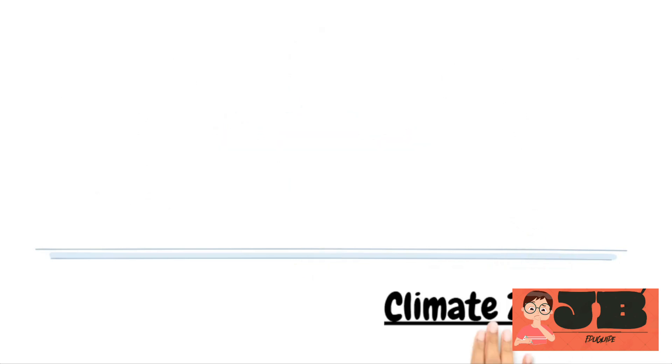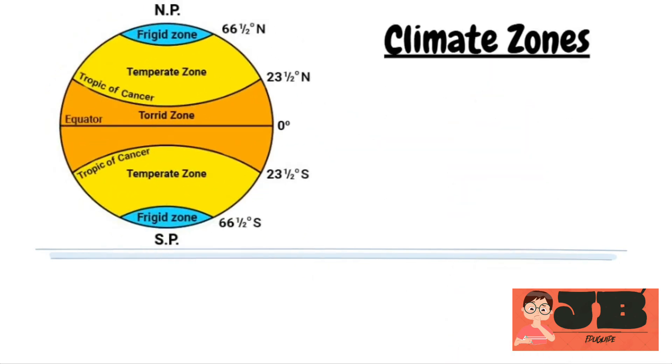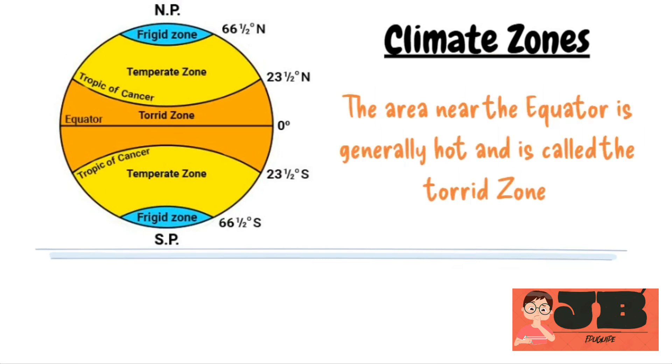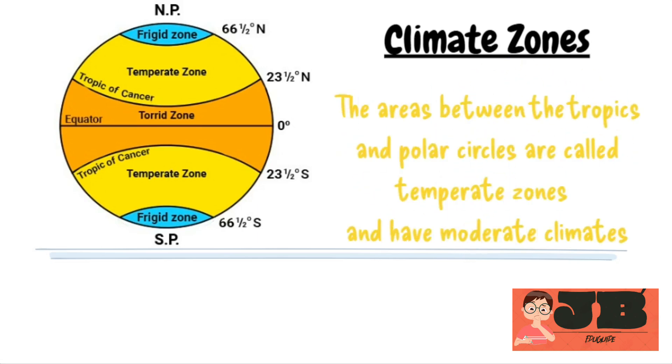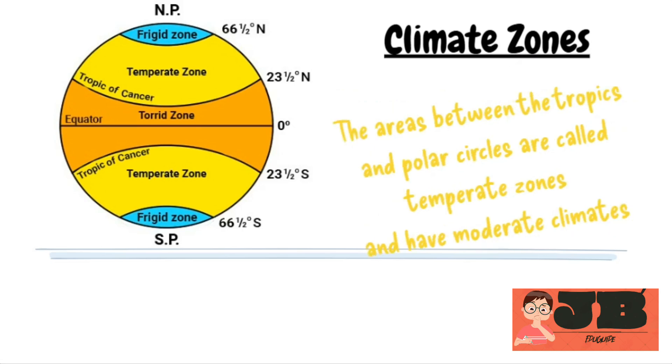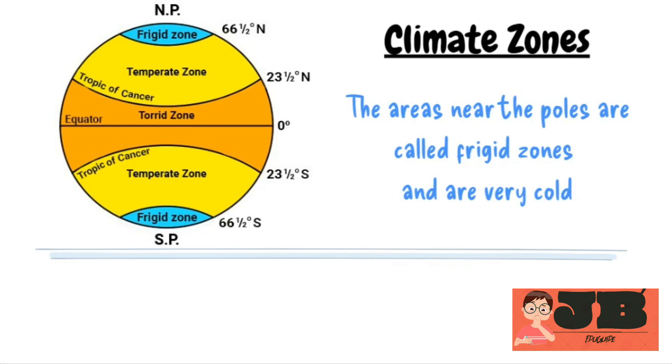The Earth is divided into different climate zones based on latitude. See the diagram. The area near the equator is generally hot and is called the torrid zone. The areas between the tropics and polar circles are called temperate zones and have moderate climates. The areas near the poles, both south and north pole, are called frigid zones and are very cold.